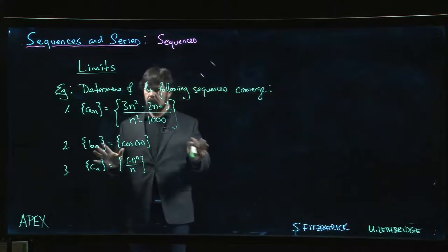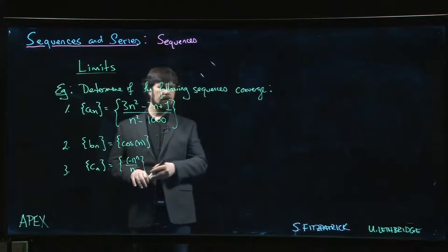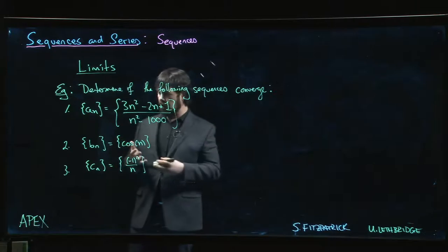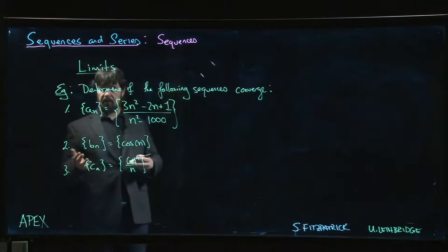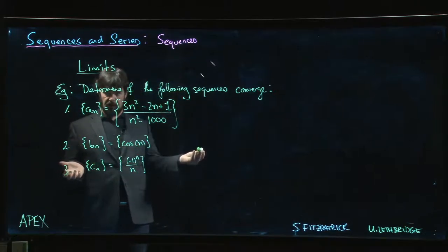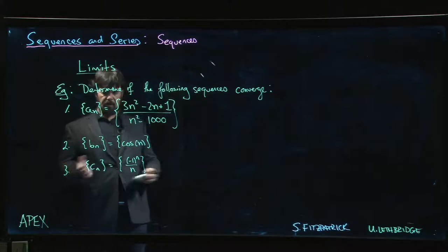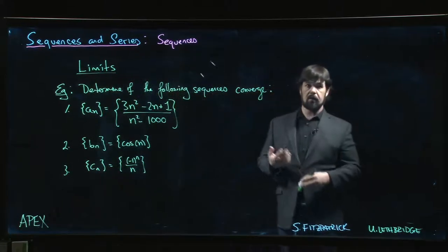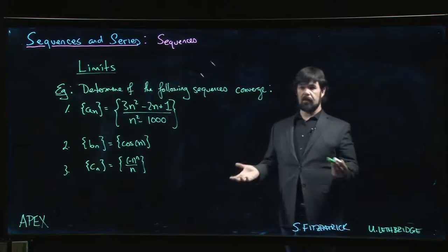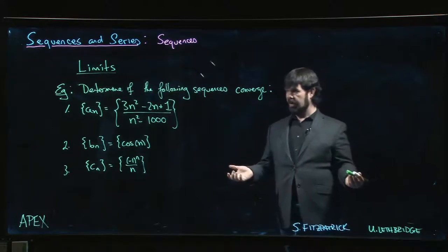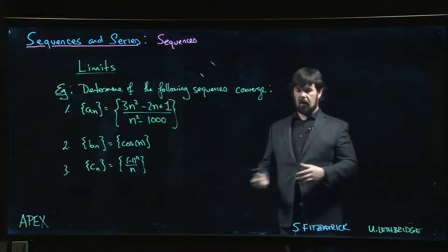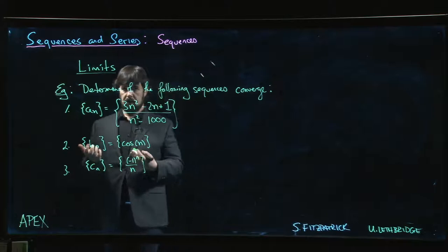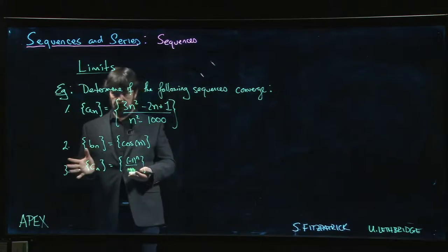In the last video we introduced the notion of convergence of a sequence, whether or not the limit of a sequence exists and gives a finite value as n goes to infinity. If you calculate the limit and it's either infinite or doesn't exist, then the sequence diverges. A convergent sequence is one where we actually get a number for the limit.